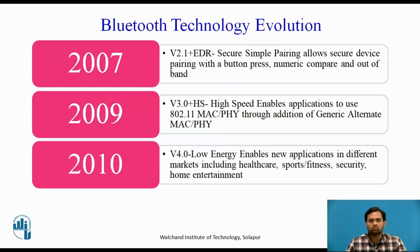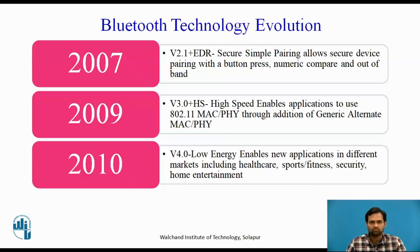We can consider two devices: one is a smartphone and another is a smartwatch. The smartwatch and smartphone are connected with the help of Bluetooth, and data present in the smartwatch is sent to the smartphone. You can keep track of your health with the help of these gadgets, and the communication and data transfer between these two devices is done with the help of Bluetooth Low Energy. This is the evolution of Bluetooth technology.